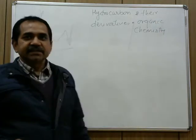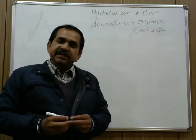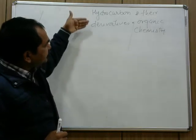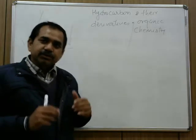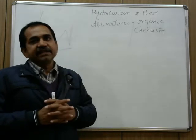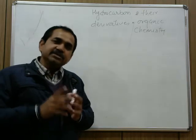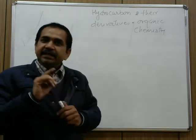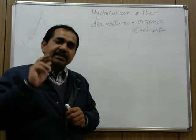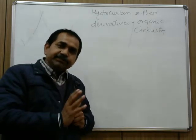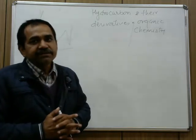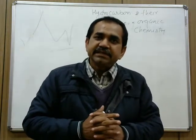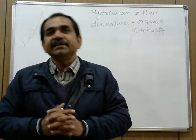In the modern era, the literal meaning of organic is not considered. Organic chemistry is that branch of chemistry that deals with the study of hydrocarbons and their derivatives. Hydrocarbons are the simplest organic compounds, containing only two elements: hydrogen and carbon. If one or more hydrogen atoms of a hydrocarbon are replaced by any other atom or group, then the resulting compounds are called derivatives of hydrocarbons.